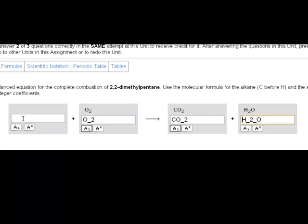Now, 2,2-dimethylpentane, well, that's a pentane backbone, so that's five carbons and two methyl groups. That would be seven carbons and 16 hydrogens.